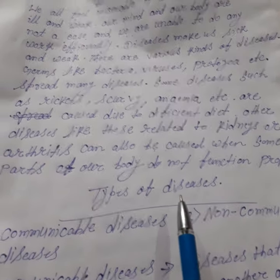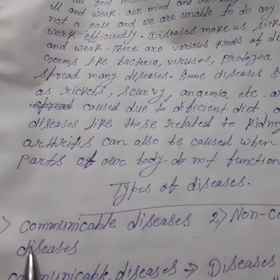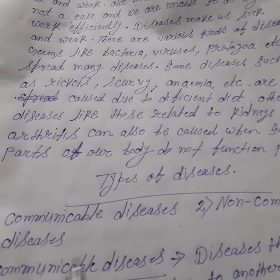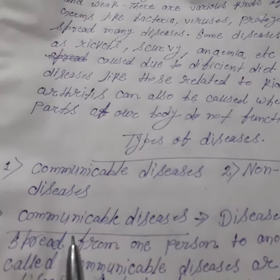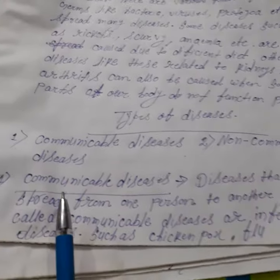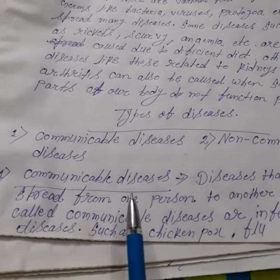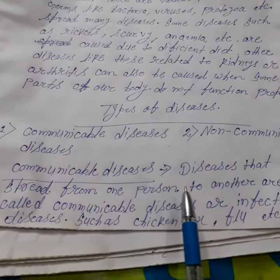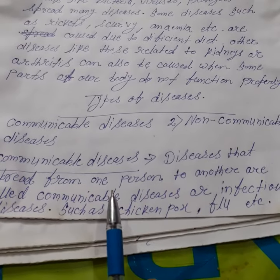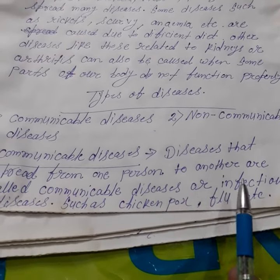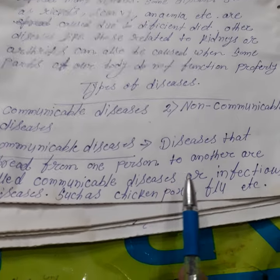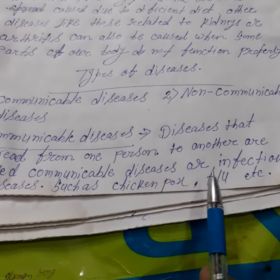Now, types of diseases. First, communicable diseases, and second, non-communicable diseases. Diseases that spread from one person to another are called communicable diseases or infectious diseases, such as chickenpox, flu, etc.